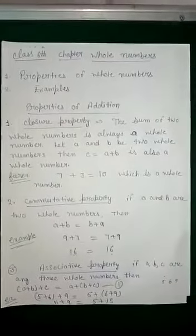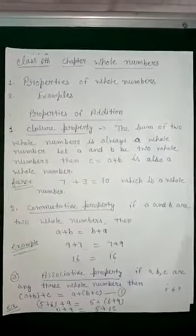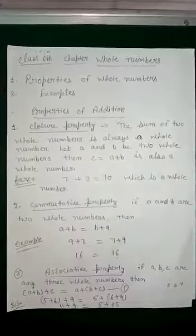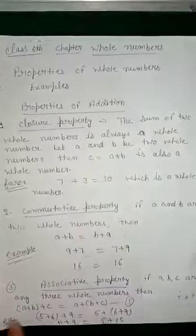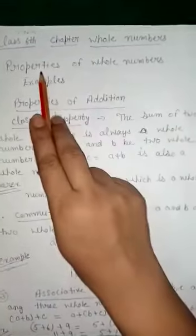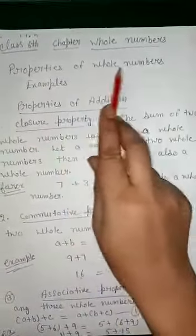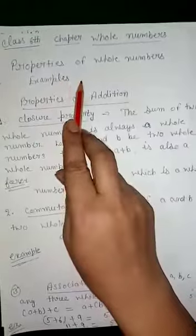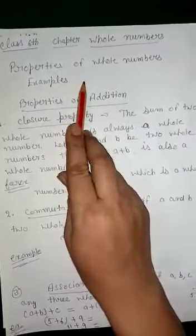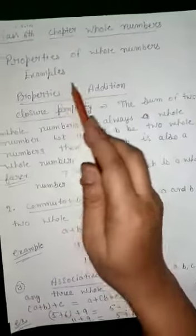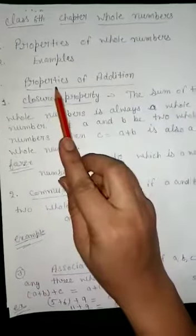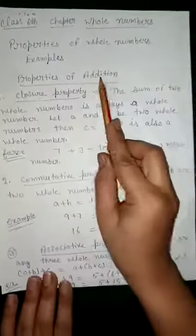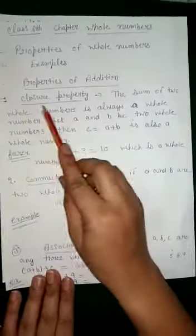Hello students. Today we will discuss the chapter 'Whole Numbers.' In this chapter we will discuss the properties of whole numbers and the examples of exercise 2.2. Firstly, we will discuss the properties of addition. The first is the closure property.